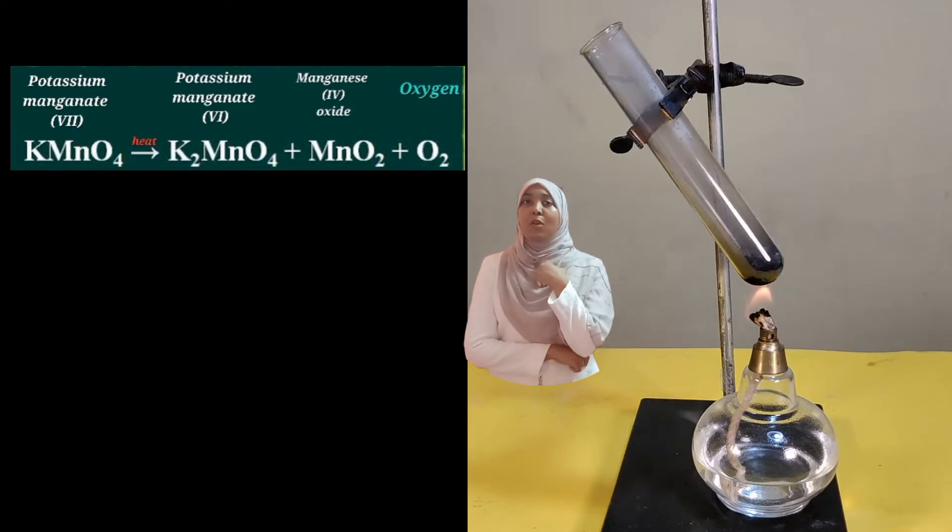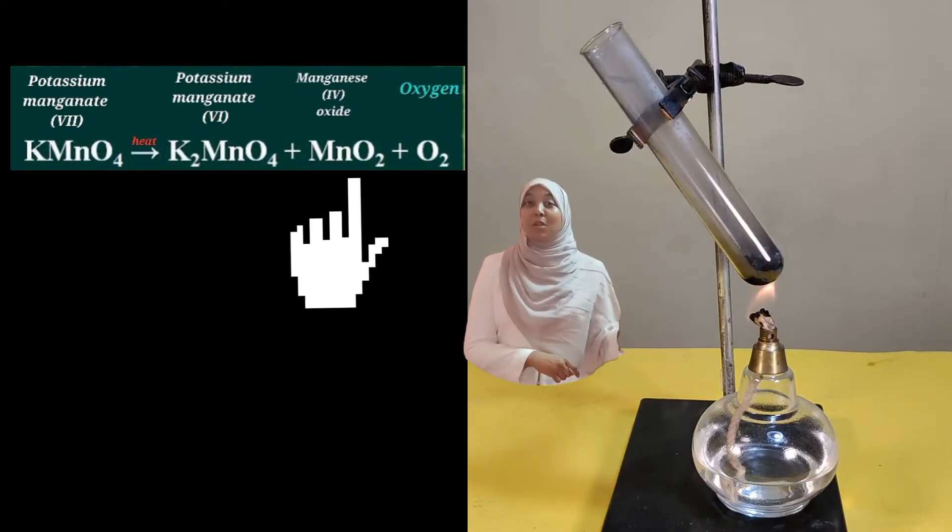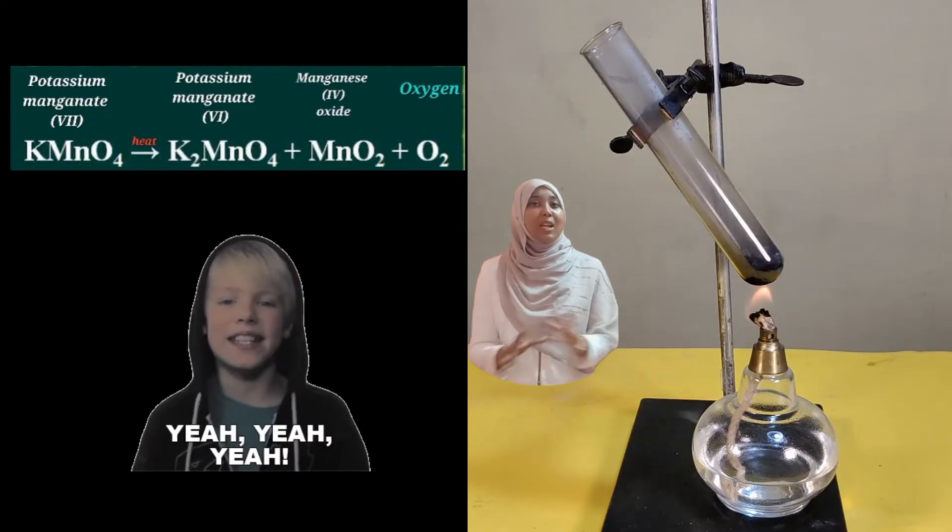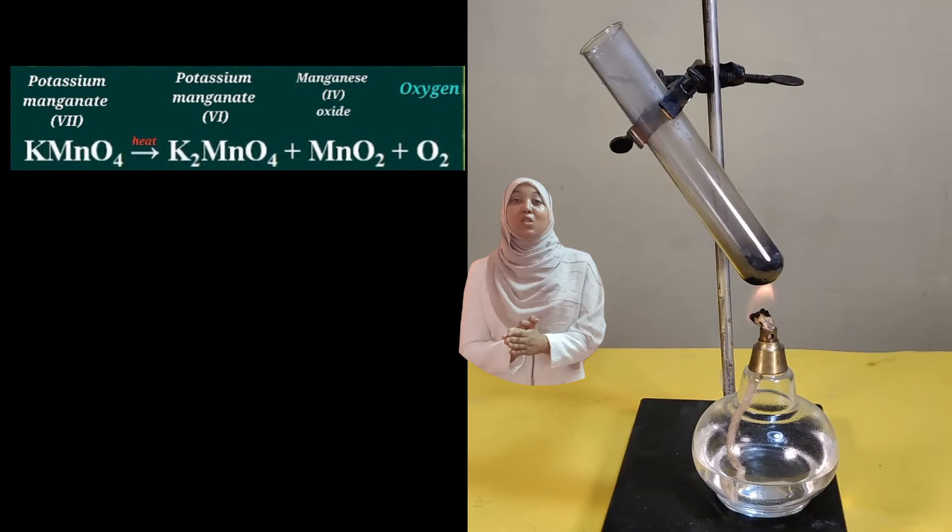In case you're wondering, this seems familiar. It should be familiar because this is the catalyst that we used in the first method. How cool is chemistry? It's all related. So potassium manganate 7 (KMnO4) on heating decomposes, leading to the formation of potassium manganate 6 (K2MnO4), manganese 4 oxide (MnO2), and oxygen gas.